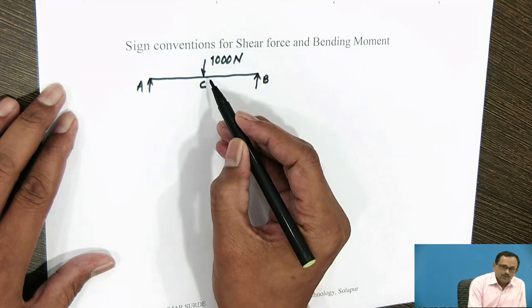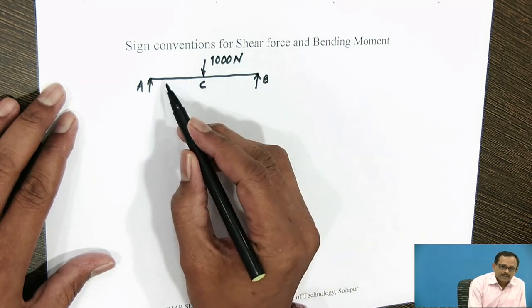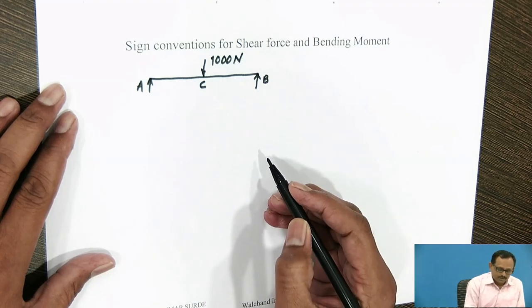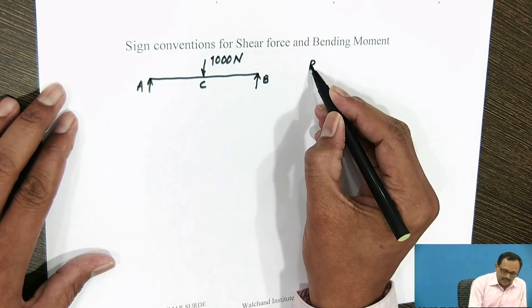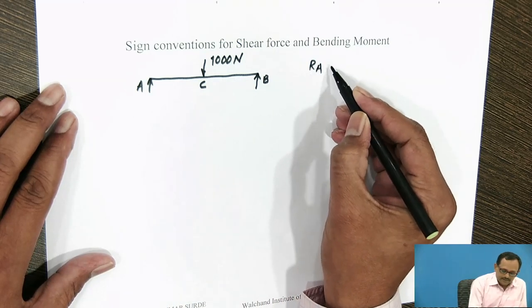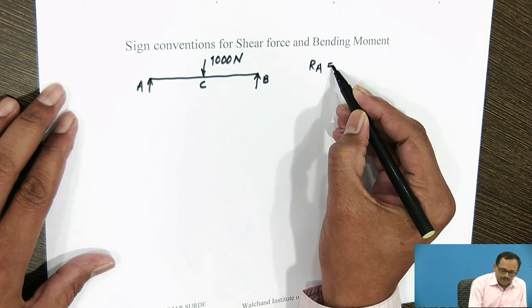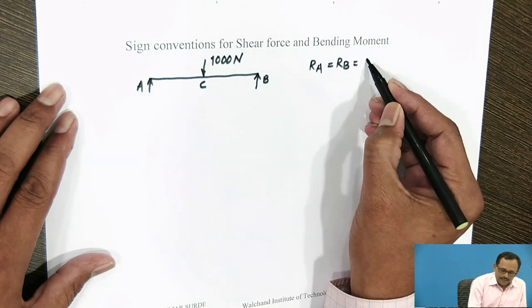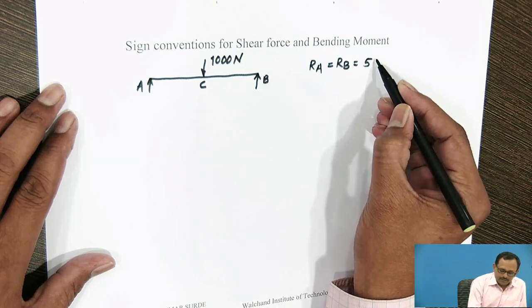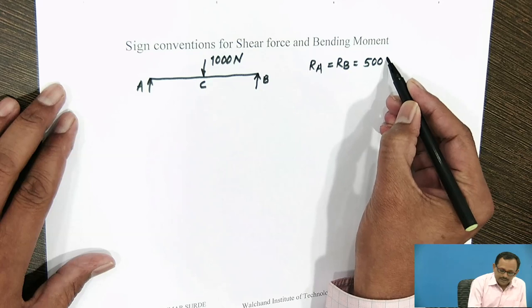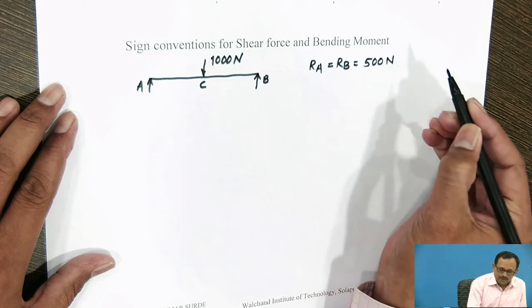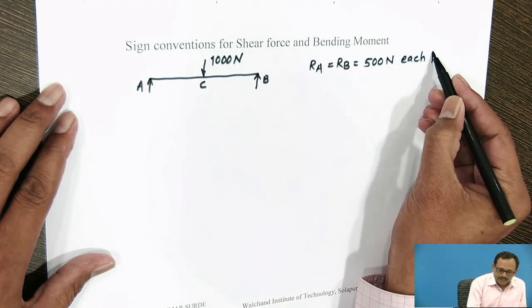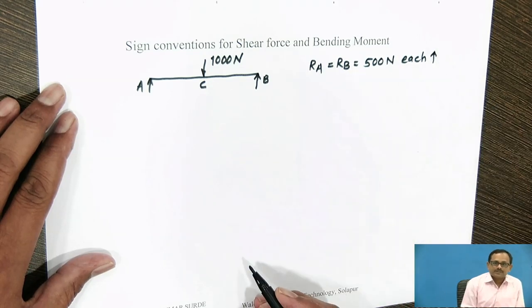As the load is acting at the mid of the beam, the reaction at A and reaction at B are equal and the magnitude is 500 N each, acting vertically upwards.